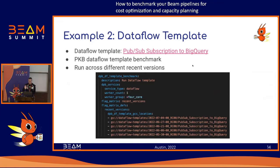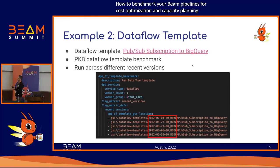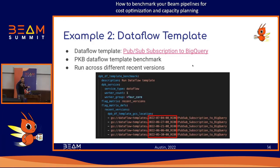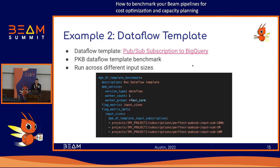This is an example YAML file running across different versions of the template — an example of how you can do release testing and performance regression for a specific template before upgrading to prod, or your own Dataflow template that you may be developing. You can do a cross-product of versions and different machine sizes. Another example is varying different input sizes — I have subscriptions with 10 million events, 1 million, and 100K. You can vary the workload like that and test across configurations to see if any interesting characteristics show up.